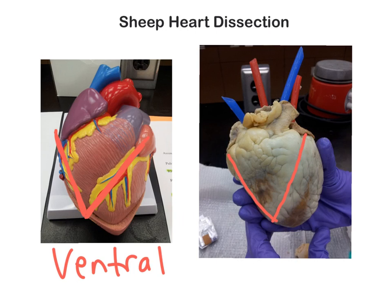Another key point is, if we look right here, that is the main branch coming off the heart — that is the pulmonary trunk, and you can quite easily see it right here too. That's always going to be leading from the anterior or the ventral surface.